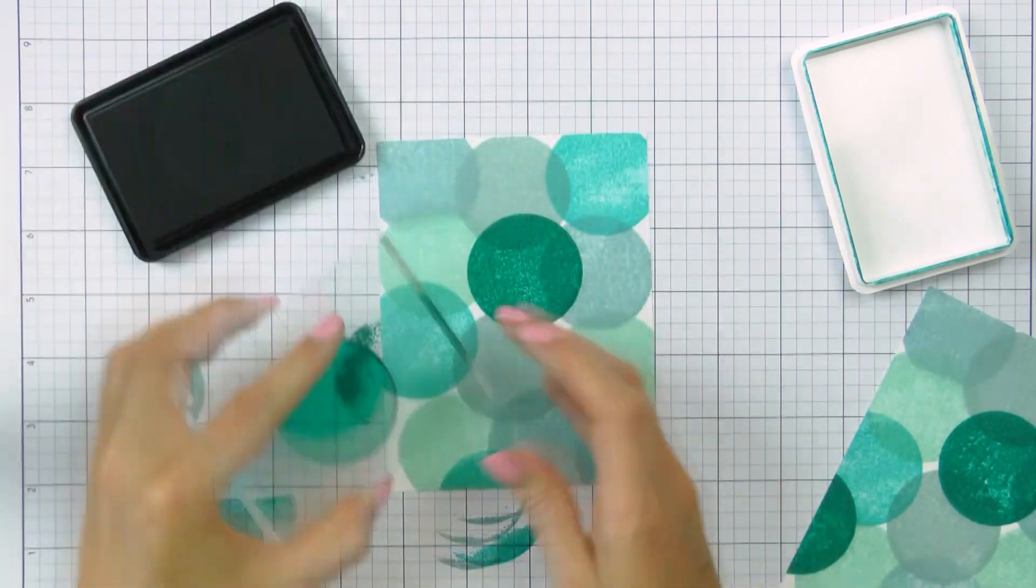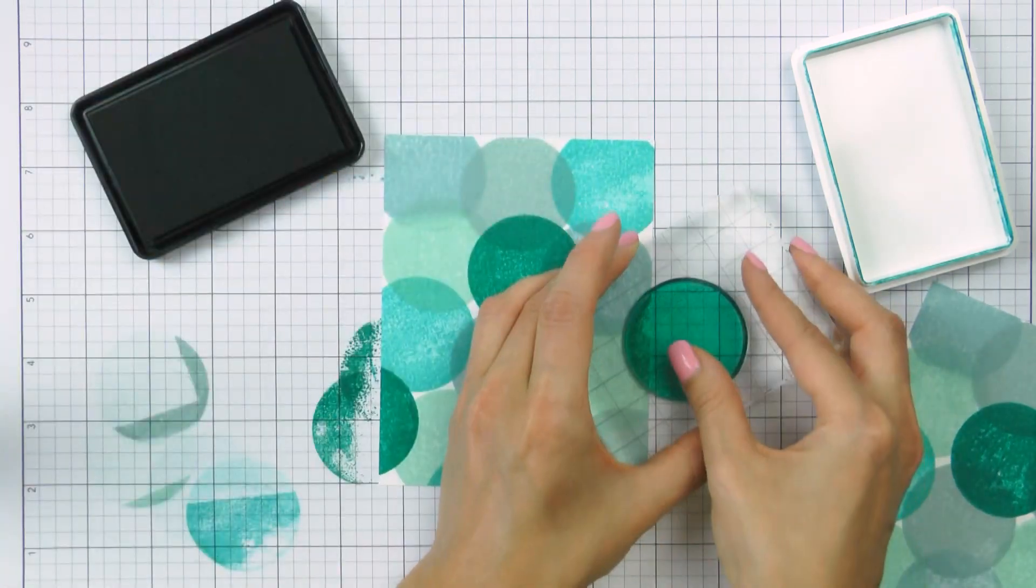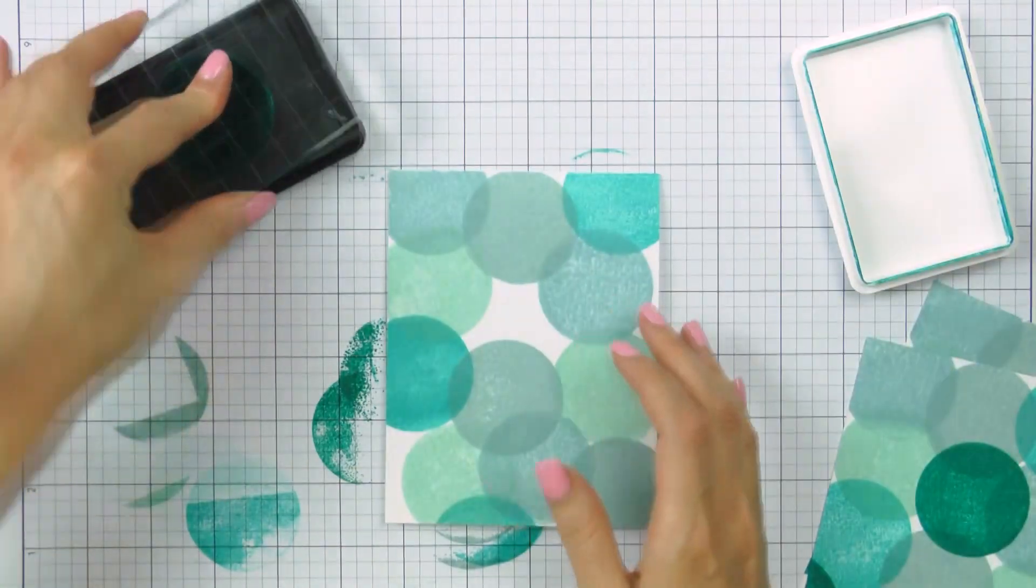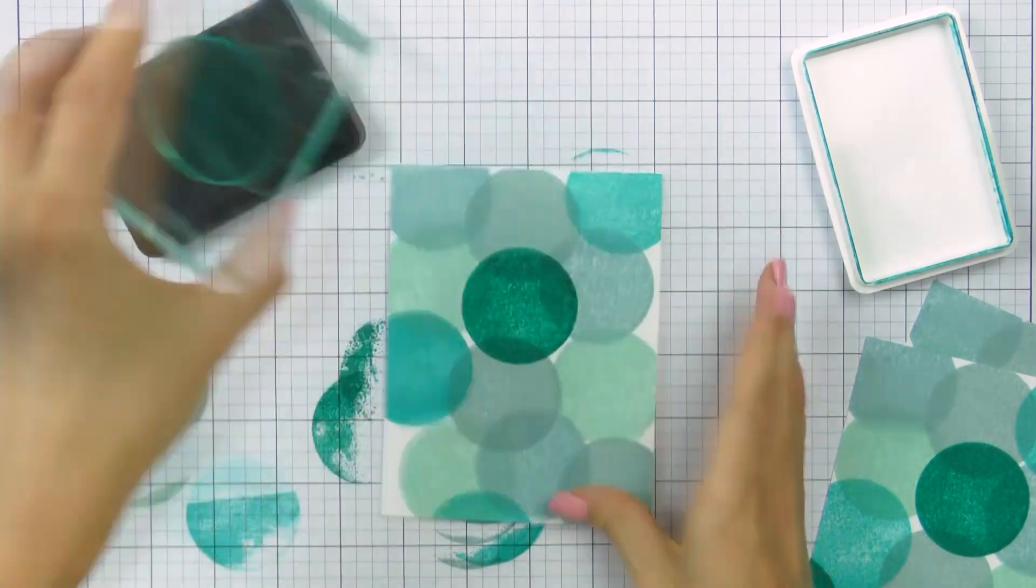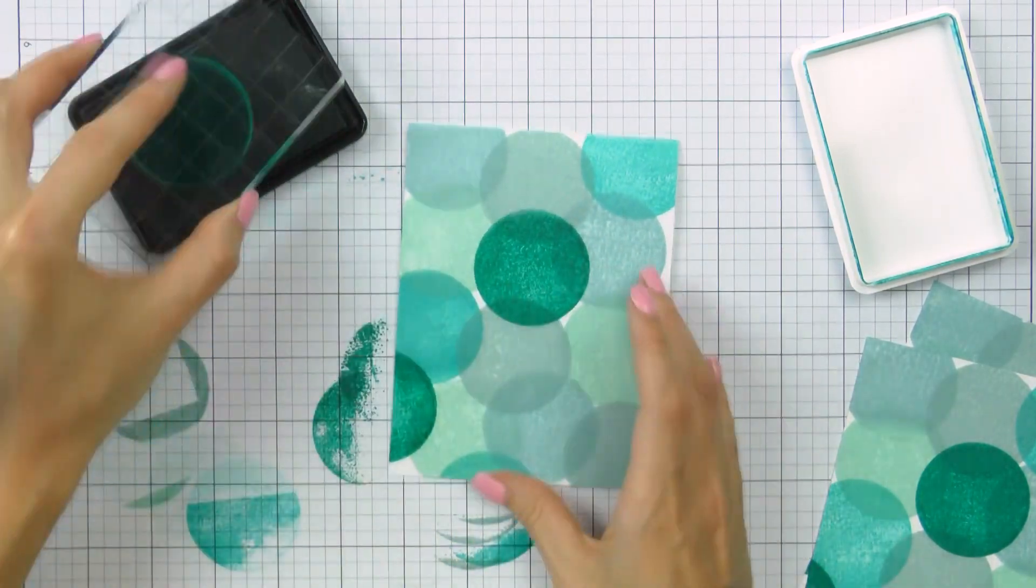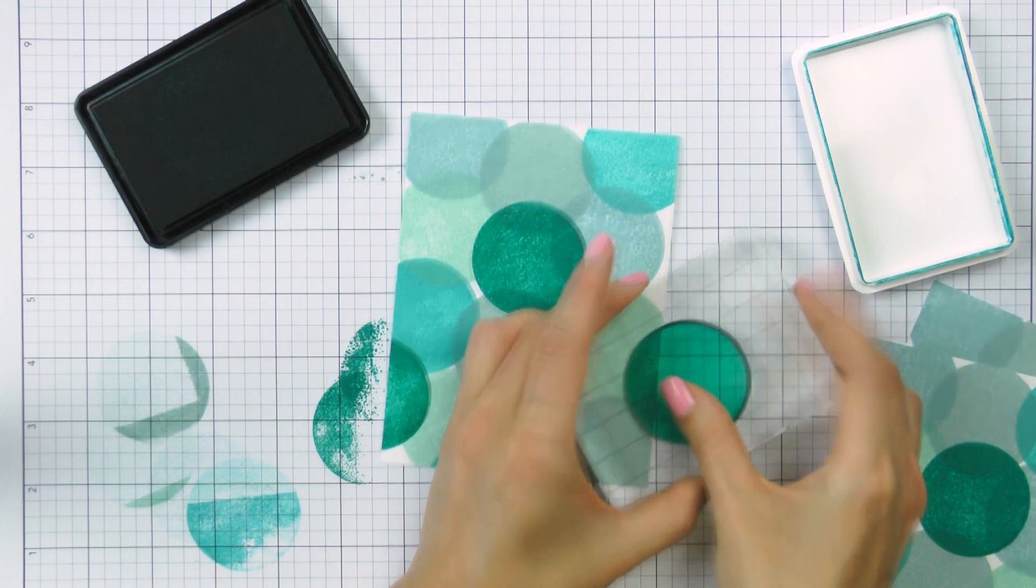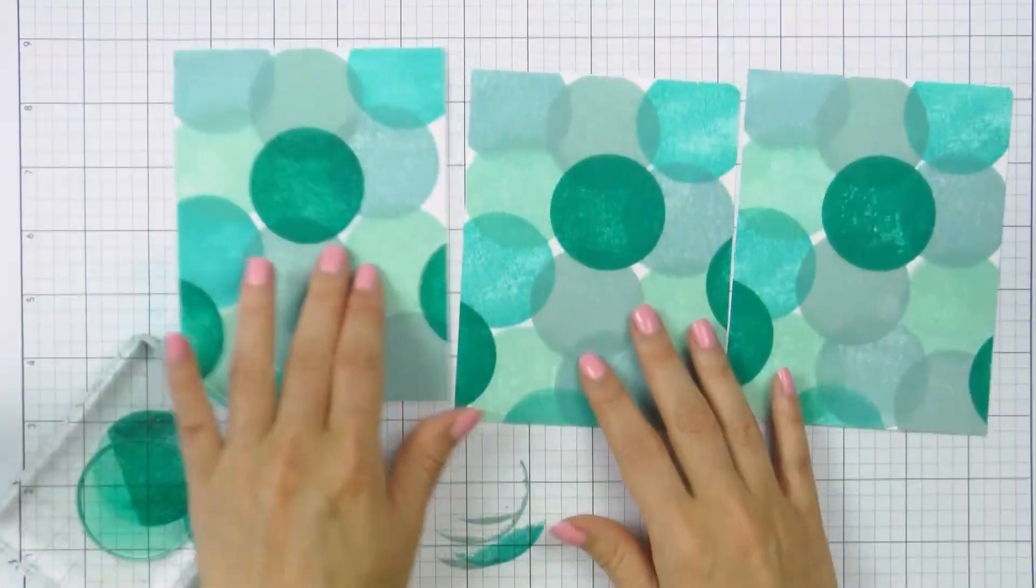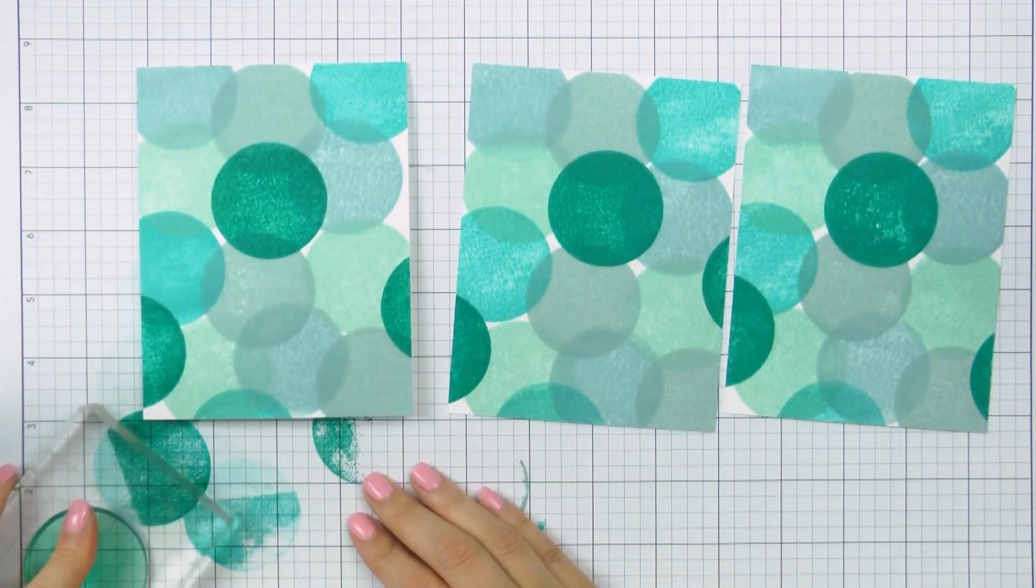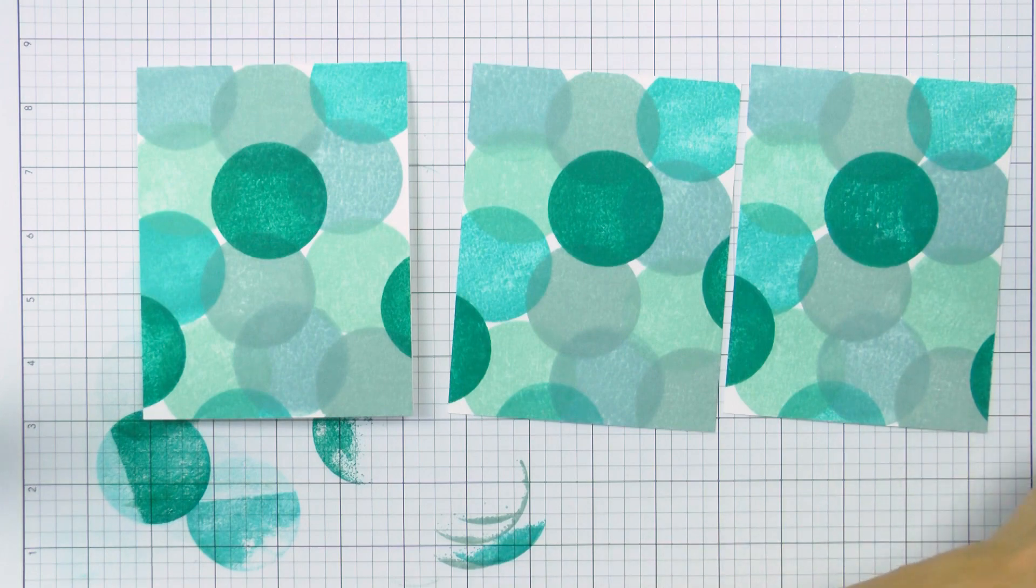The paper that I'm using here is Neenah Solar White 110 and 80 pound cardstock. I'm stamping two backgrounds onto 80 pound panels and one background directly onto 110 pound card front. So here are the three of my backgrounds, they're very similar but not identical.